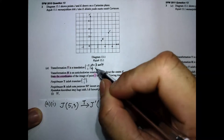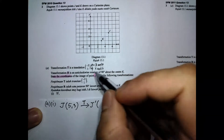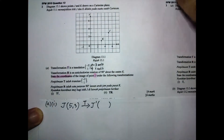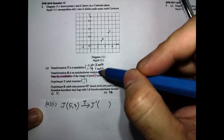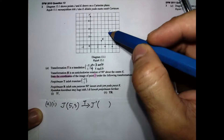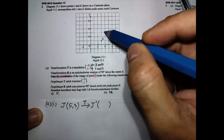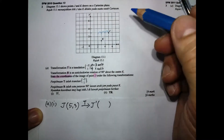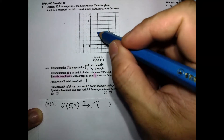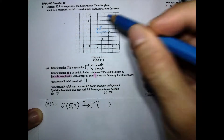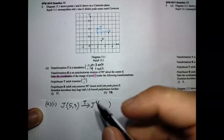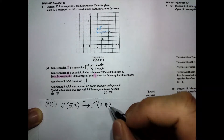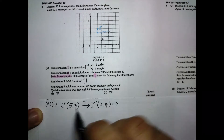We always do left and right before up and down. So from J, we move three units to the left — one, two, three — and then one unit going up. This gives us the first image of J prime, with coordinates two, four.